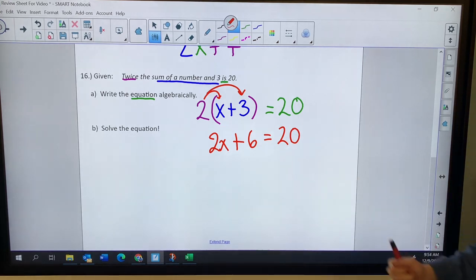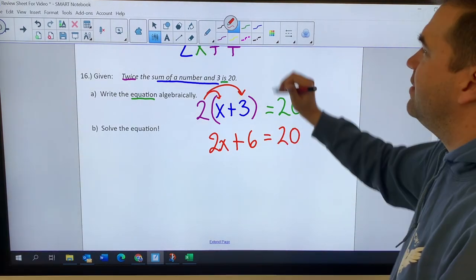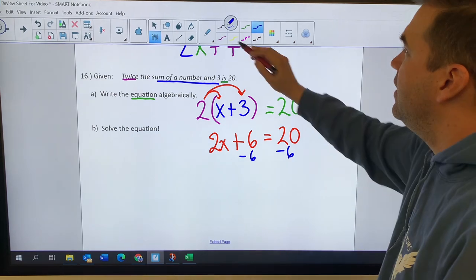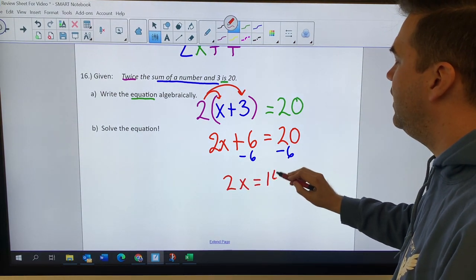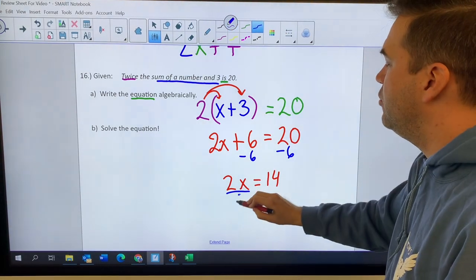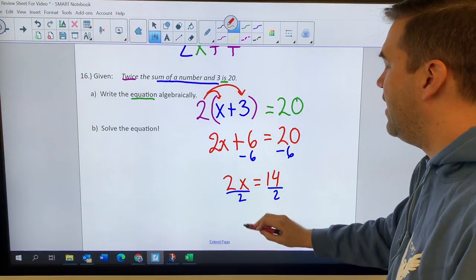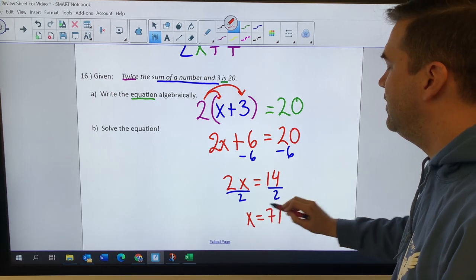Now I've got a two step. I'm going to subtract the six on both sides, leaving me with two X equals 14. And when I divide by two, I end up with X is equal to seven.